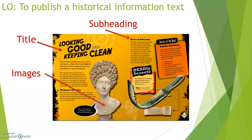The next feature we have here are images. An image really helps bring an information text to life, especially for children. There's nothing worse than reading an information text which is just pages and pages of writing. Images hook the reader in and also give you loads of information from one picture. So instantly looking at this picture here, I get a really good understanding of what hairstyles would look like in Roman times without pages and pages of writing. The images are really important — we need to make sure we're putting some pictures into our work today.